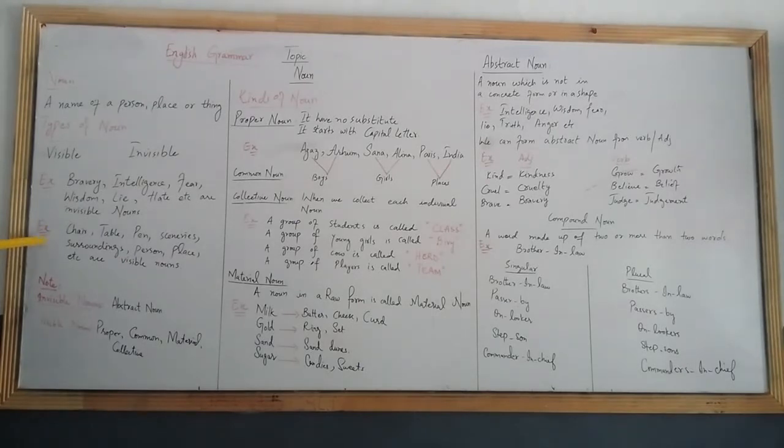Next examples are chair, table, pen, scenery, which are surrounding us, which are visible, personal places, etc. These are visible nouns. These are things you can see and touch.